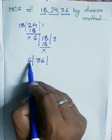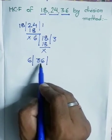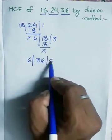Now 36 is divided by 6. 6 sixes are 36. It will become cancelled.